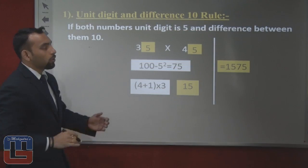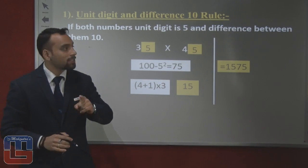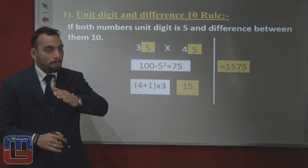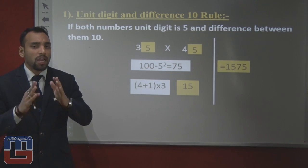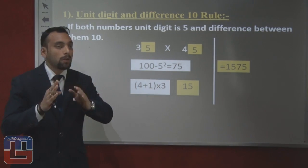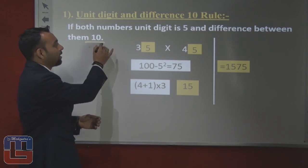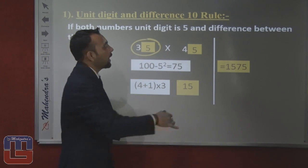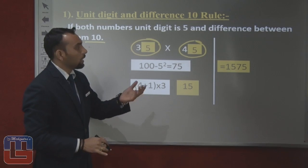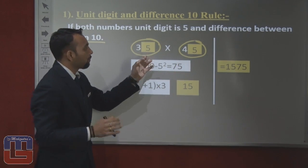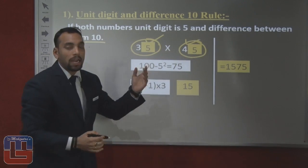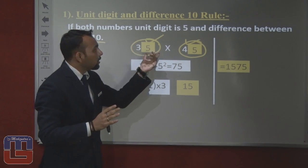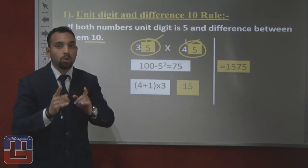The first rule of multiplication is the unit digit and difference 10 rule. This means if both numbers have a unit digit of 5, and the difference between the two numbers is 10, we apply this rule. For example, if we take the numbers 35 and 45, the unit digit is 5 and the difference between the two numbers is 10.